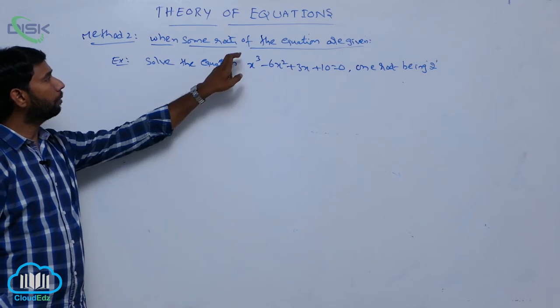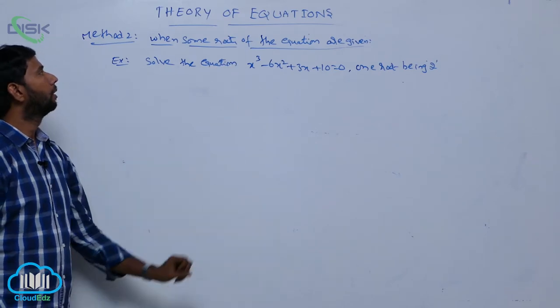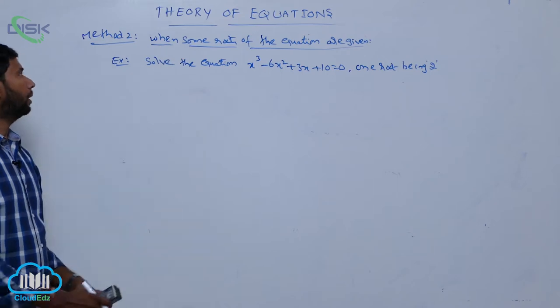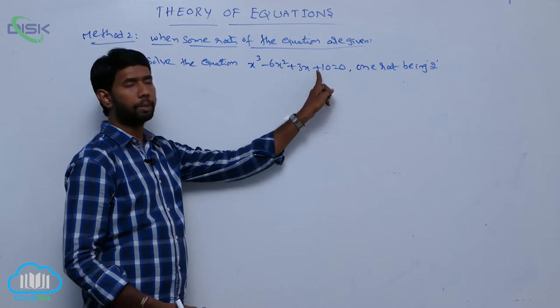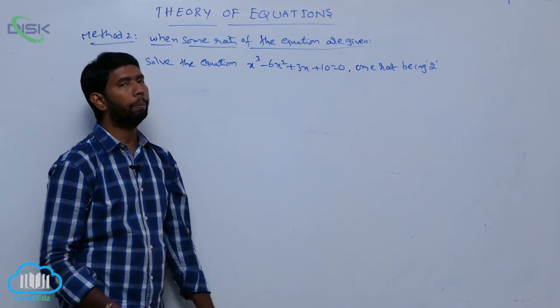Second method: when some roots of the equation are given. For example, solve the equation x³ - 6x² + 3x + 10 = 0, one root being 2.